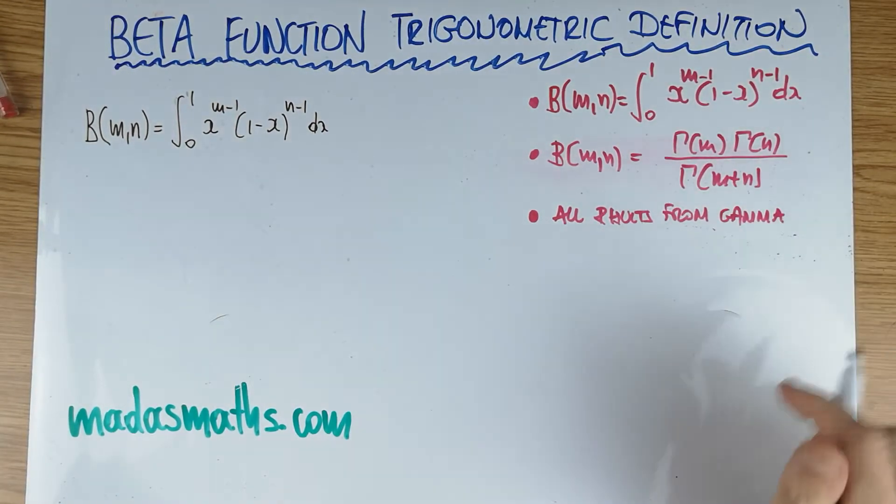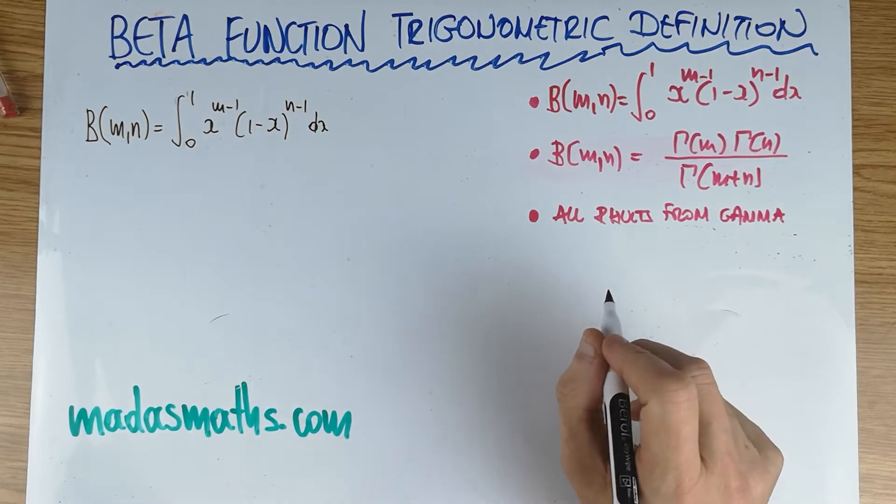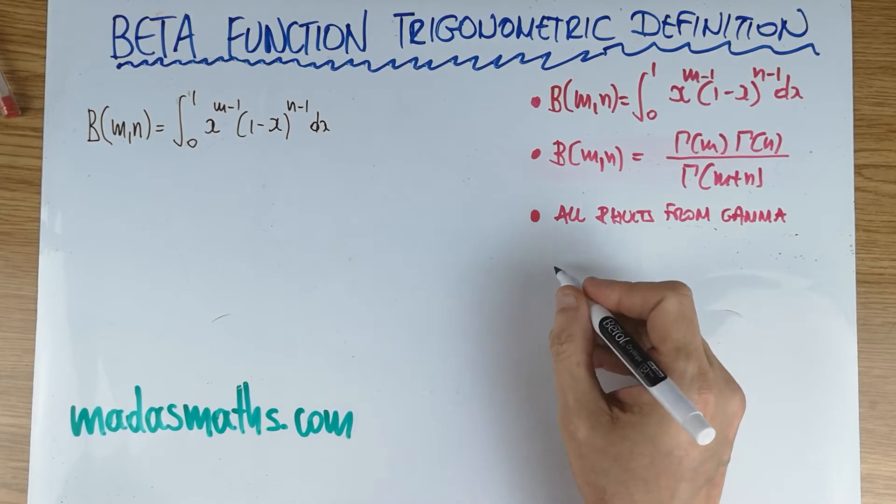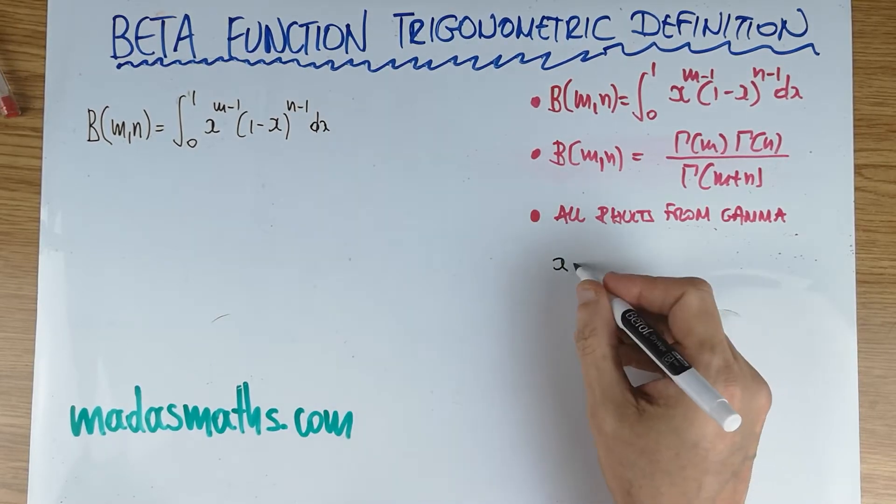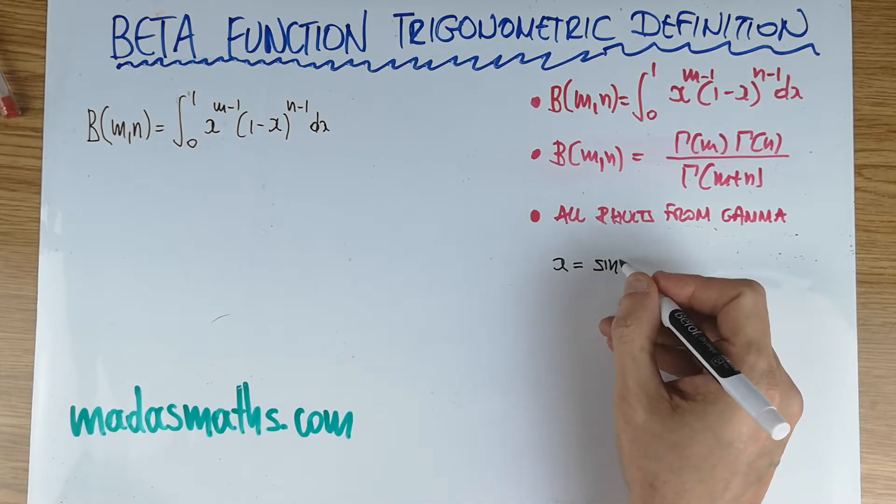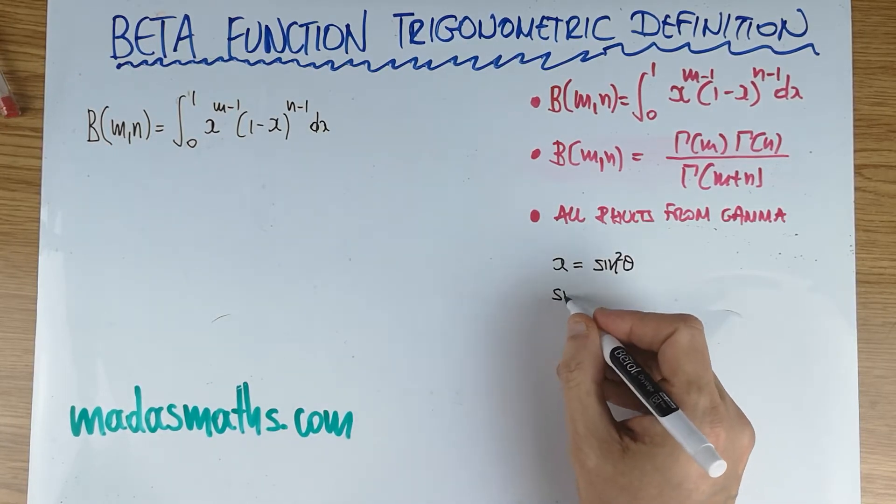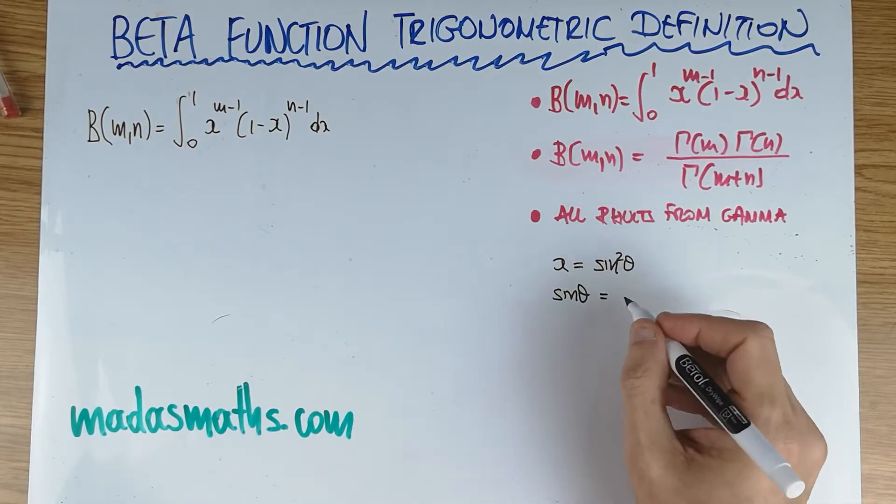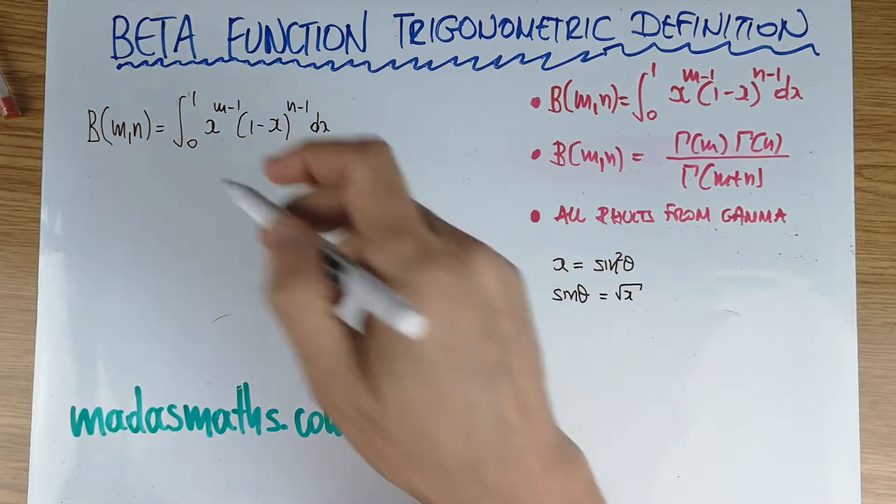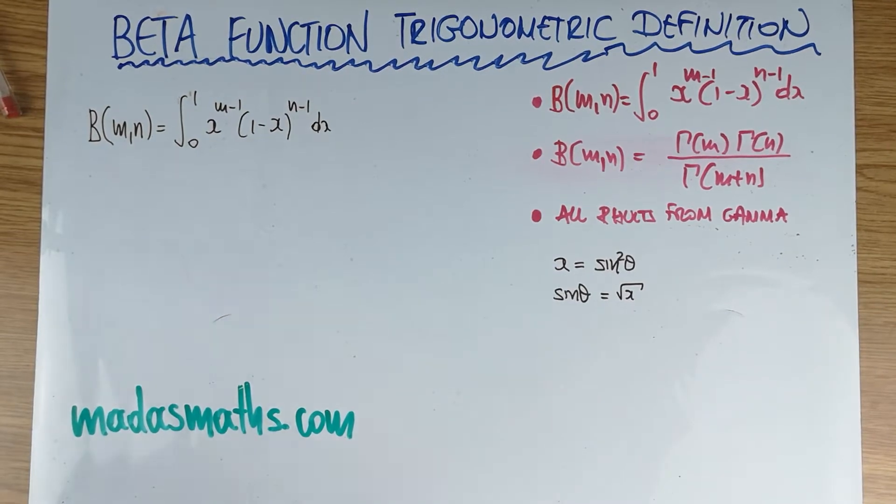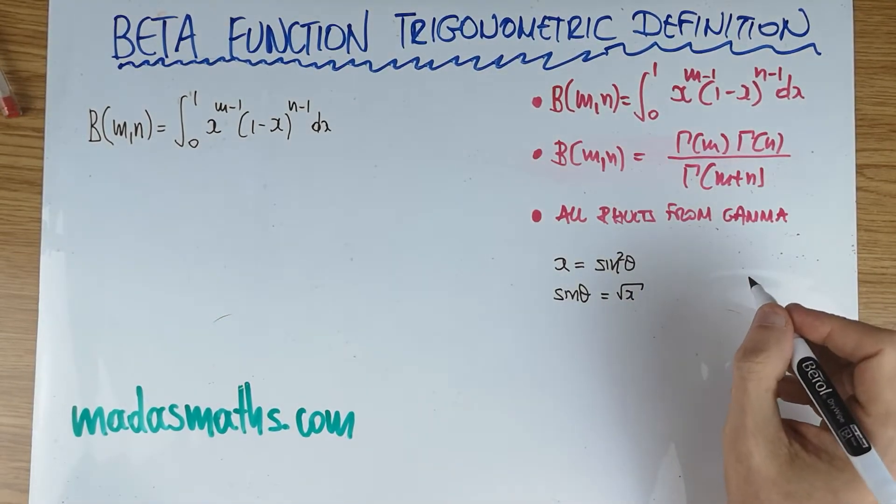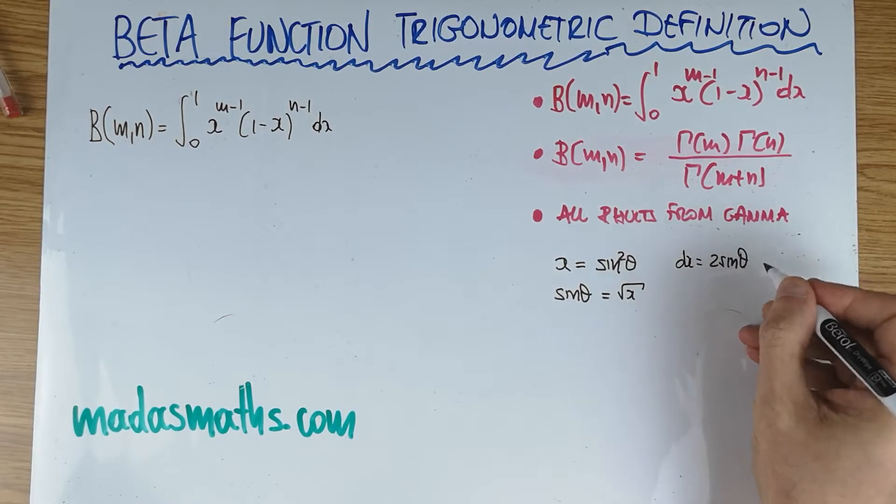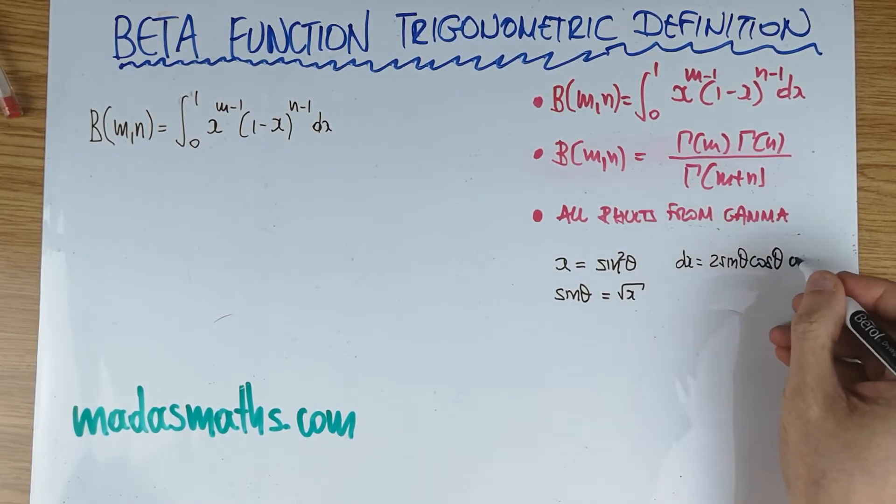We're going to use a substitution. We're going to bring trig, sines and cosines in there. Sine squared is what we want. So sine of theta equals the square root of x. For this limit, it's the positive square root. And dx is 2 sine theta cos theta d theta.